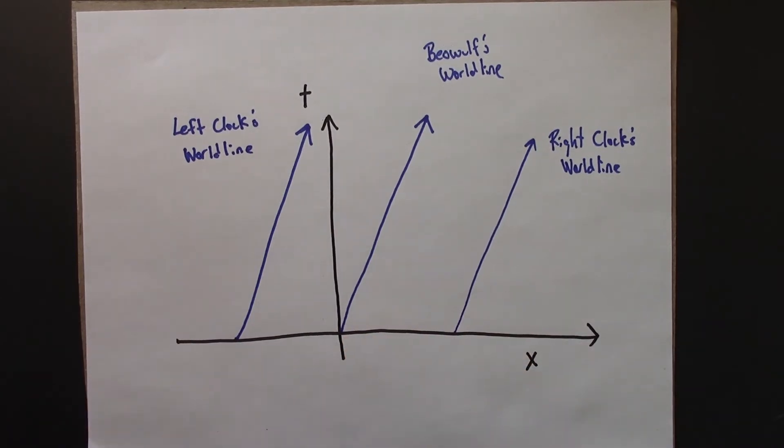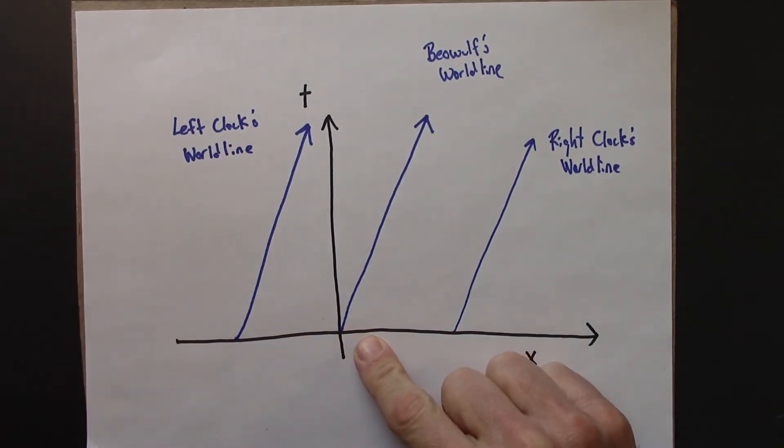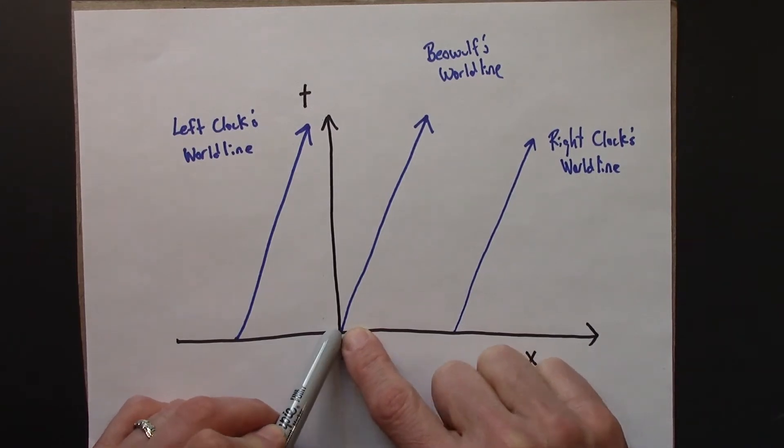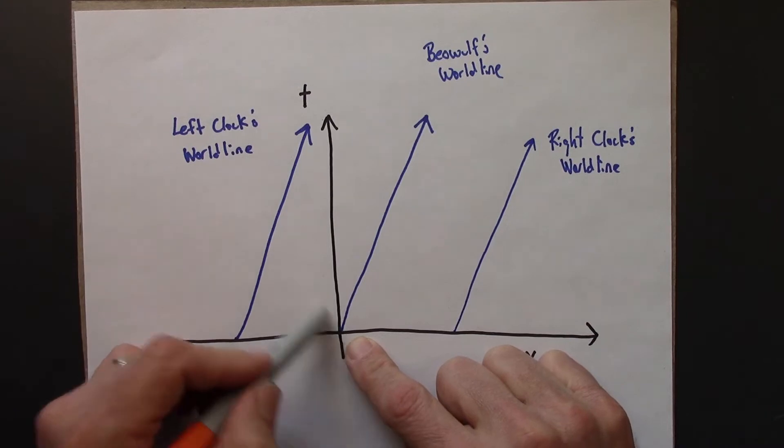So now what about the light flashes? What do those look like to Anastasia in this reference frame? So here's the thing. The speed of light is the speed of light. Anastasia is going to observe the speed of light to be the speed of light.